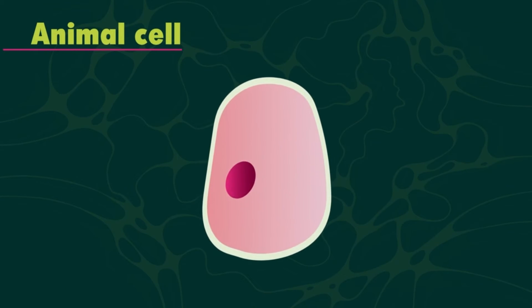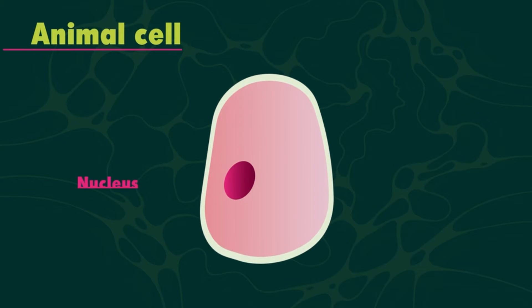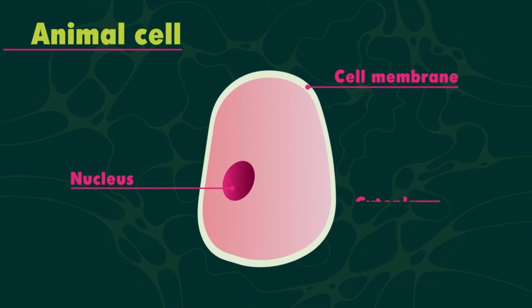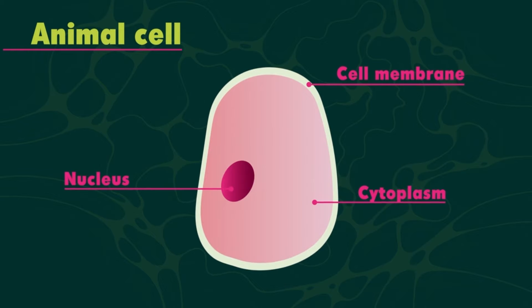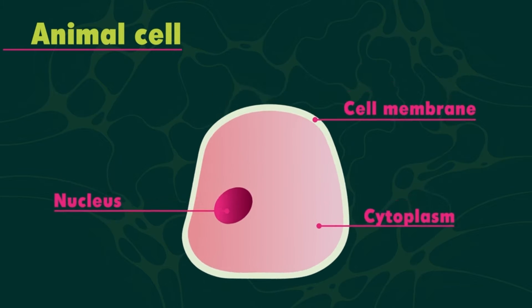An animal cell is made of three main parts: a nucleus, cell membrane, and cytoplasm which holds the rest of its critical components.